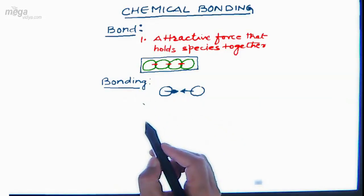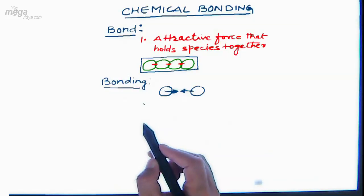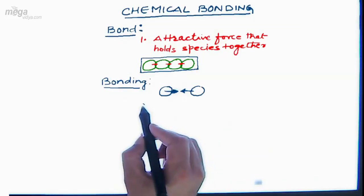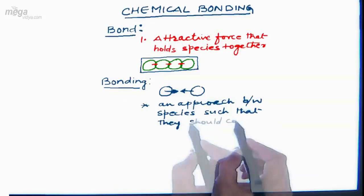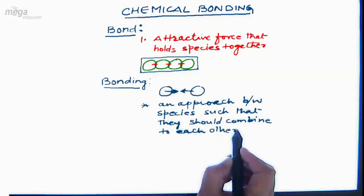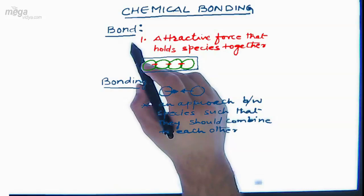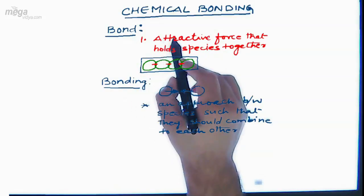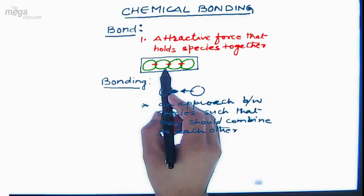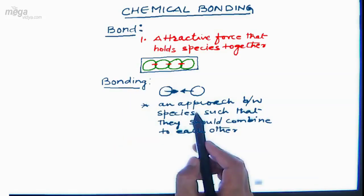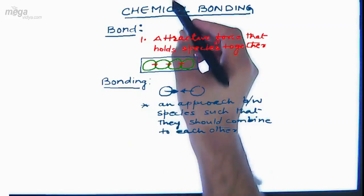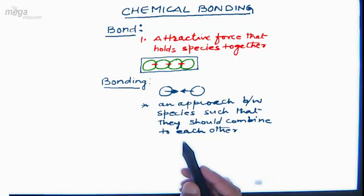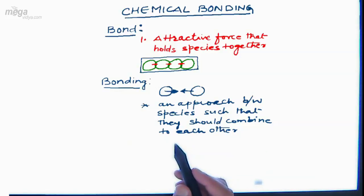For the formation of a bond, the species should be approaching each other. So 'bonding' is the phenomenon which signifies the approach of particles or species towards each other for bonding with each other. Bonding can be explained as an approach between species such that they combine with each other. So in 'chemical bonding': 'bond' is the force which binds species together, and 'bonding' represents the approach between species after which they combine.